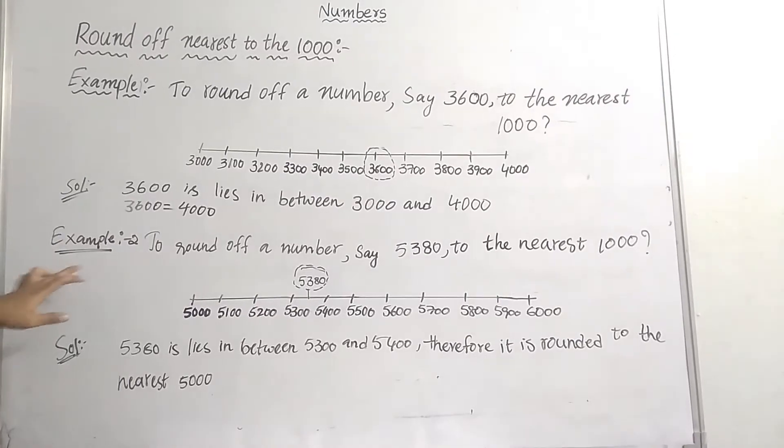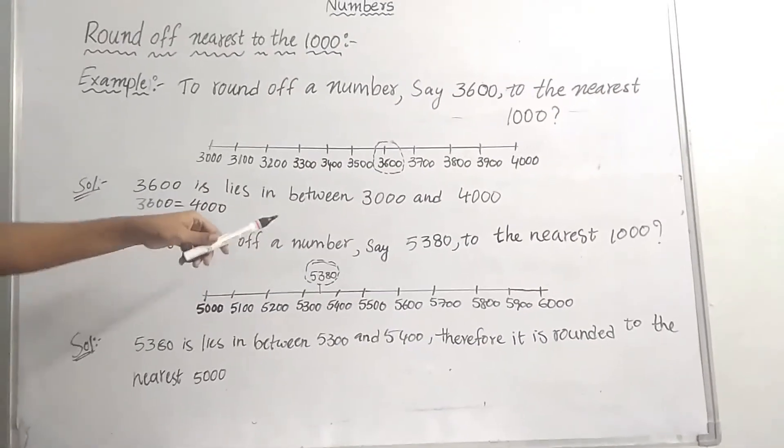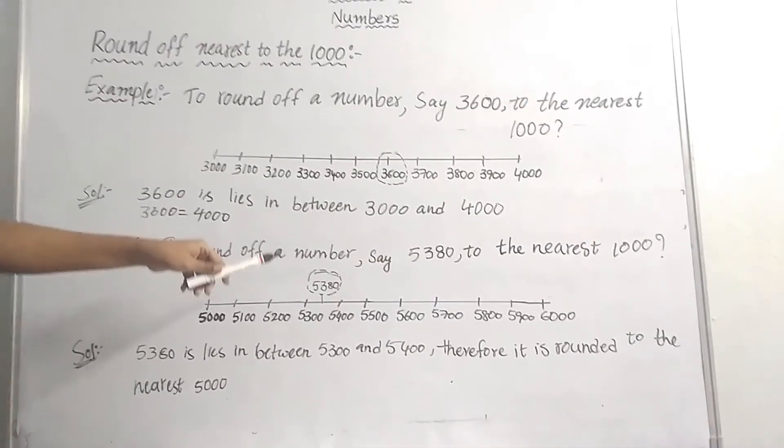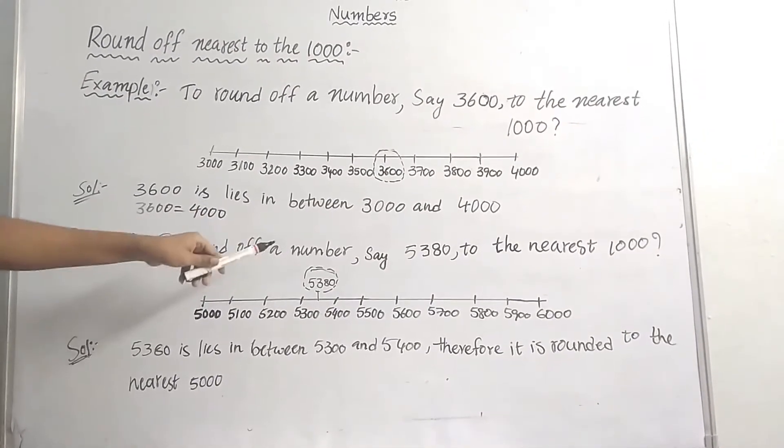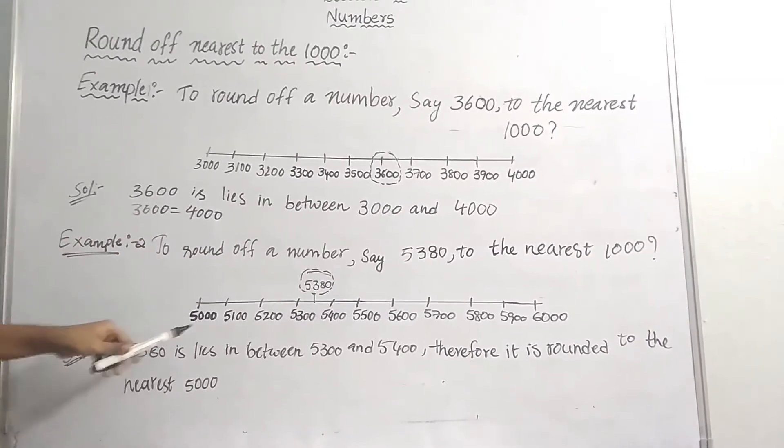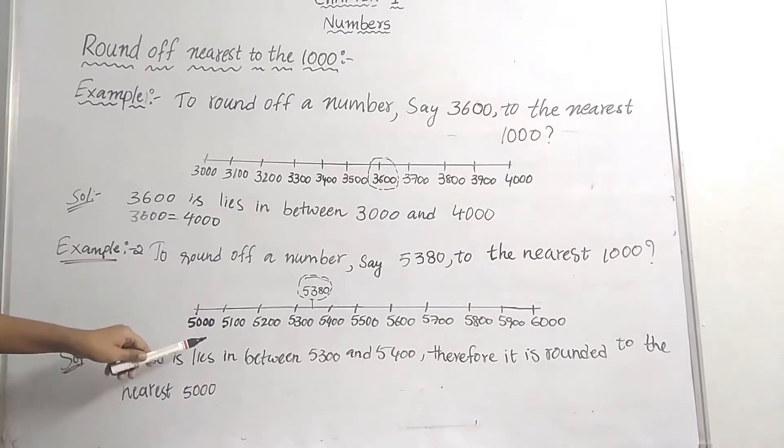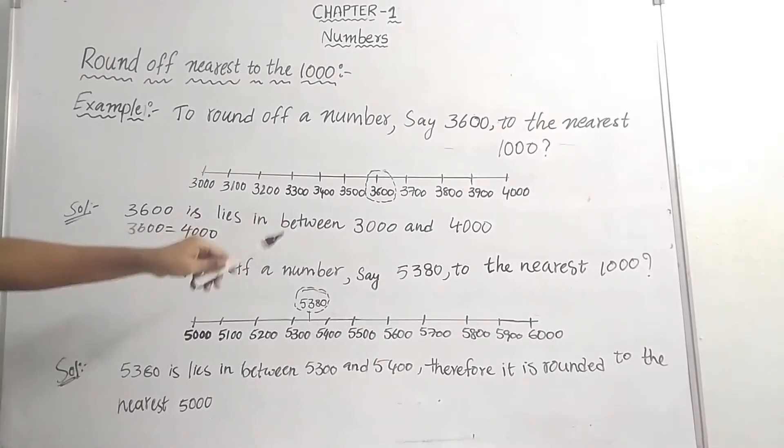Next, taking example 2. To round a number, say 5380, to the nearest 1000. This is also a thousands value. I am taking a scale from 5000 to 6000. The rounding number is 5380.